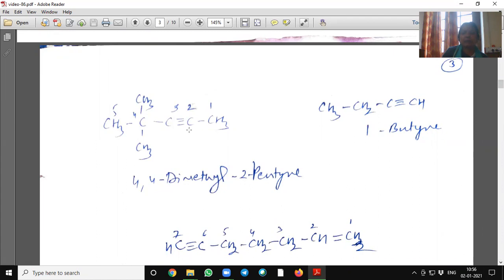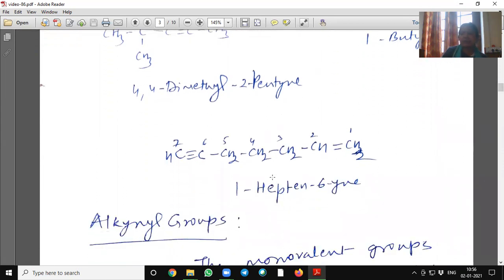So, we had given priority to this triple bond. This is 1-butyne. If suppose double bond and triple bond both are present in the molecule, then we will give priority to first double bond. See here, in this heptene molecule. So, we will give numbering from double bond. Means we are giving priority to double bond. So, it is 1-hepten-6-yne.